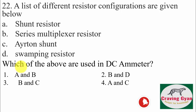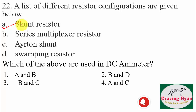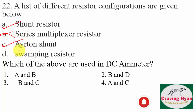Twenty-second question: a list of different resistor configurations is given. Shunt resistor — used in DC ammeter to increase range. Series multiplier resistor — used in voltmeter. Ayrton shunt — a universal shunt, can be used in DC ammeter. Swamping resistor — used in voltmeter. Hence shunt resistor and Ayrton shunt are used in DC ammeter.